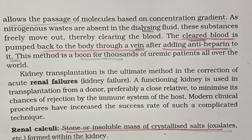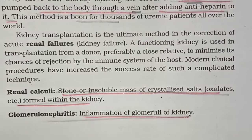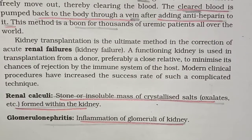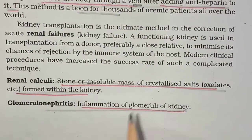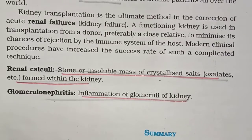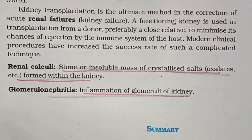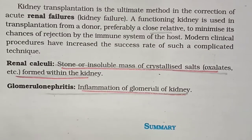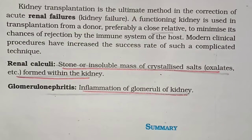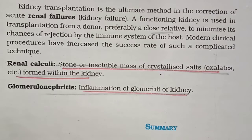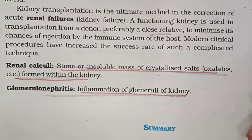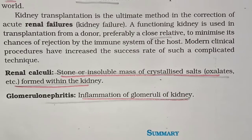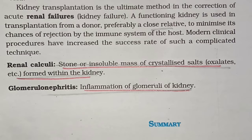We have seen uremia and dialysis. Now, if there is kidney failure and the kidney cannot function, you need to transplant the kidney. Kidney transplantation is done due to renal failure. A donor is required — a close relative is preferred as a donor so that there is less chance of kidney rejection, because our immune system may not accept foreign cells or organs and may reject them. If it is a close or matching relative's kidney, transplantation is more likely to succeed. Due to advances in clinical procedures, the rate of successful kidney transplantation is now high.